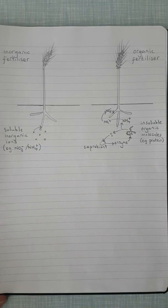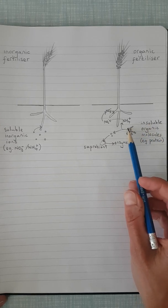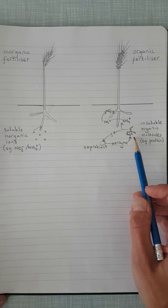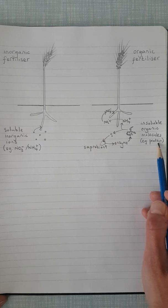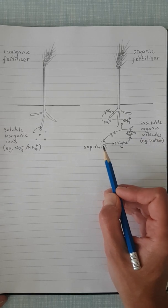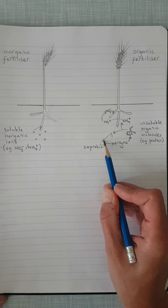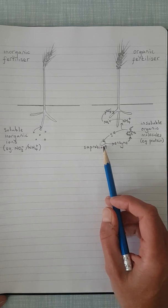Organic fertilizers consist of insoluble organic molecules, often in the form of manure or compost. These are decomposing materials that contain large organic molecules. I've just given one example here, a protein for instance, that will be broken down by saprobiotic microorganisms in the soil. Remember we talked about these in the nitrogen cycle tutorial.